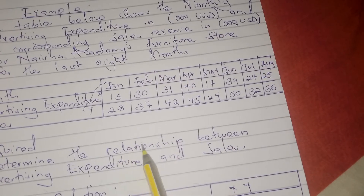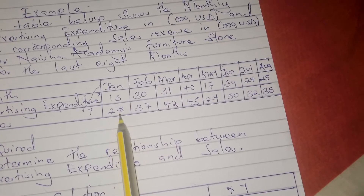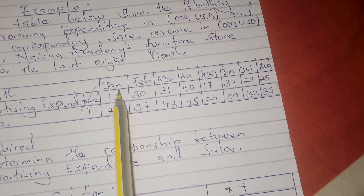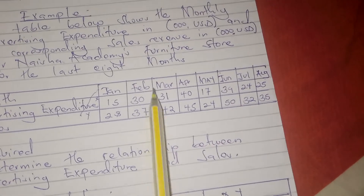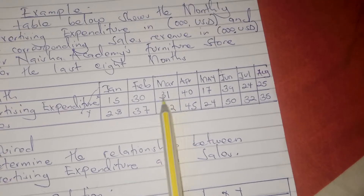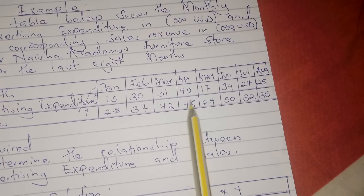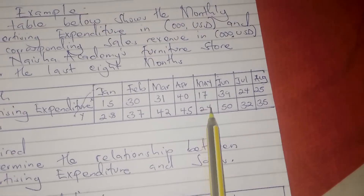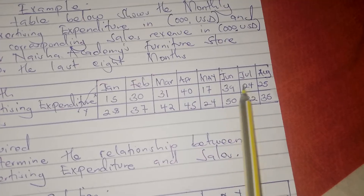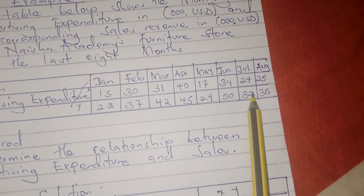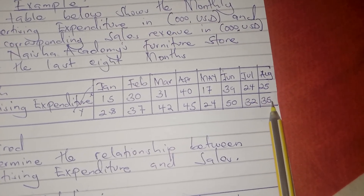We can see this from the data: when advertising expenditure was 15, sales were 28; when it increased to 30, sales increased to 37; when it increased to 31, sales increased to 42; when it increased to 40, sales increased to 45; when it reduced to 17, sales reduced to 24; when it increased to 39, sales increased to 50; when it reduced to 24, sales reduced to 32; and when it increased to 25, sales increased to 35.